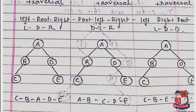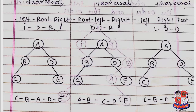B has no right child, so B is the left child of A. We then move to root A, and then to the right child D. D has no left child, so we visit D as root, then move to the right child E. So the in-order traversal is: C, B, A, D, E.